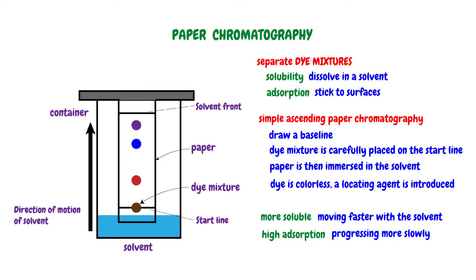As shown, the substance forming a purple spot has the highest solubility and the lowest adsorption ascending the paper faster. On the other hand, a substance with a red spot demonstrates the lowest solubility and highest adsorption, moving more slowly.